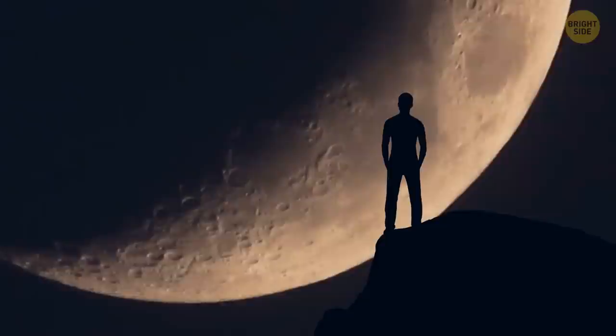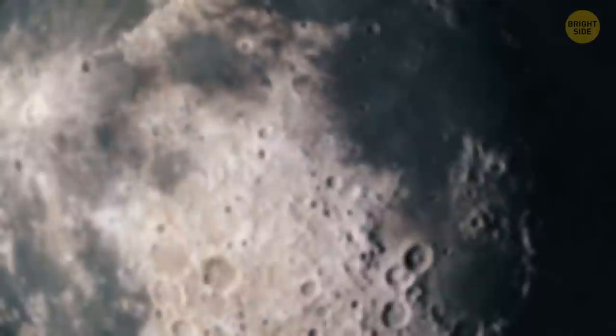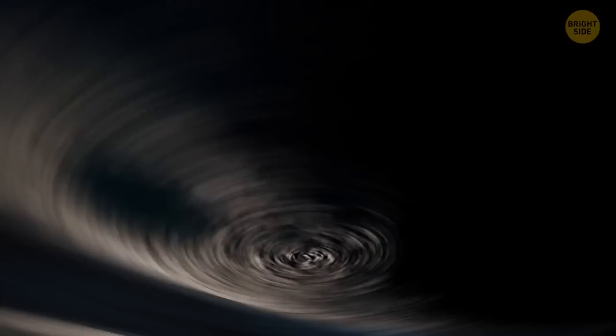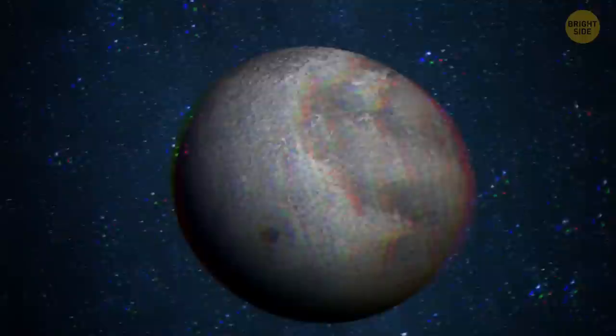Before space exploration started, people had never seen the other face of the moon. They didn't know what the far side looked like. While the near side of the moon is mostly large plains covering impact basins, the far side is rugged and cratered. The crust is thicker there, with less evidence of volcanic activity.